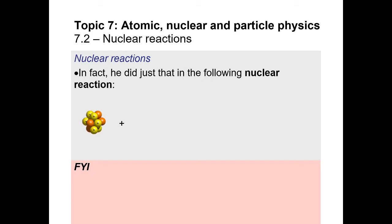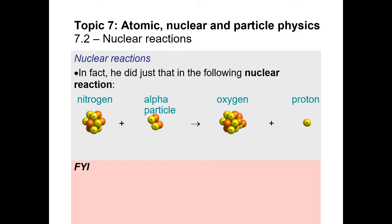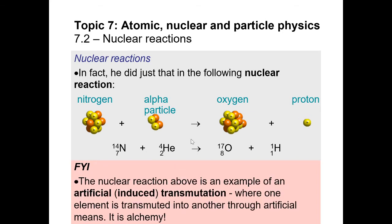Here is the nuclear reaction Rutherford performed: starting with nitrogen and bombarding it with an alpha particle, he was able to create oxygen with a leftover proton. The reactants are on the left side of the arrow and the products on the right. The proton on its own is really just the nucleus of a hydrogen atom, missing its electron. Since this was the first example of artificial or induced transmutation, you might know it by another name: alchemy.